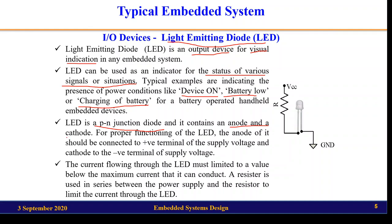An LED is a PN junction diode consisting of an anode and a cathode terminal. The anode has the longer terminal and the cathode has the shorter terminal. For proper functioning, the anode is connected to the positive of the battery and the cathode to the negative terminal or ground. Another connection method is to connect VCC at one end and the microcontroller or microprocessor port pin at the other end. When the output is logic high or 5 volts, the LED will glow.